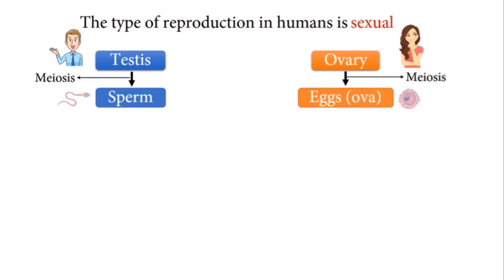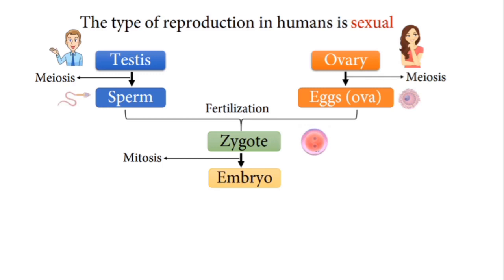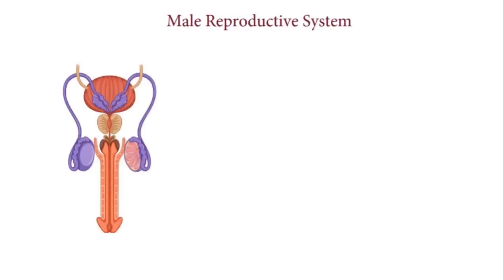The union of an egg cell and a sperm cell to form a zygote is known as fertilization. After the zygote has been formed, a series of cell divisions known as mitosis occurs in the zygote to give rise to an embryo. This embryo continues to develop into a fetus, and when it is given birth to we have a baby. The increase in complexity from zygote to baby is known as development.